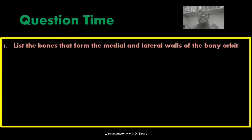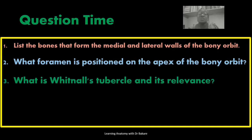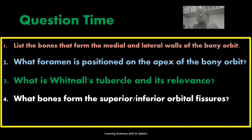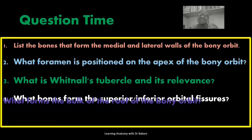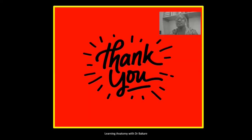Let's check our understanding. Questions to consider: List the bones forming the medial and lateral walls of the bony orbit. What foramen is positioned at the apex of the bony orbit? What is the Whitnall's tubercle and its relevance? What bones form the superior and inferior orbital fissures? And what forms the bulk of the roof of the bony orbit?